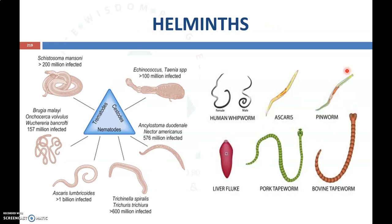These figures show helminths. By seeing this, we can understand that everything will be in a tubular-like structure, and this tubular-like structure is made up of a special protein known as tubulin. Many of the drugs which act on helminths do so by preventing the synthesis or polymerization of this tubulin to form a tubular structure.